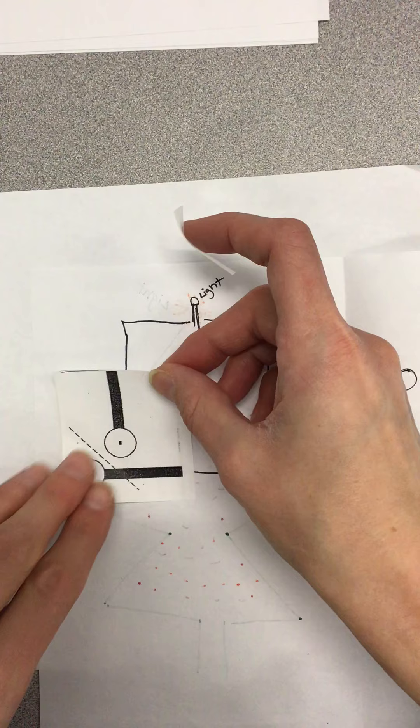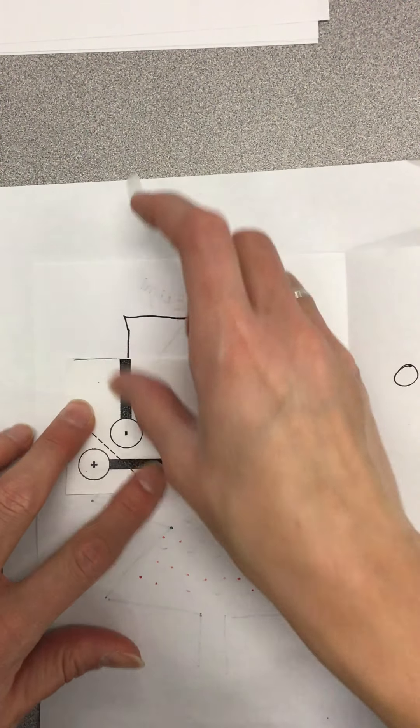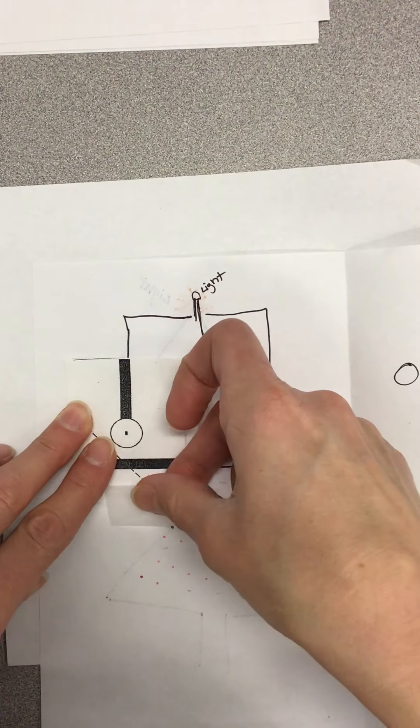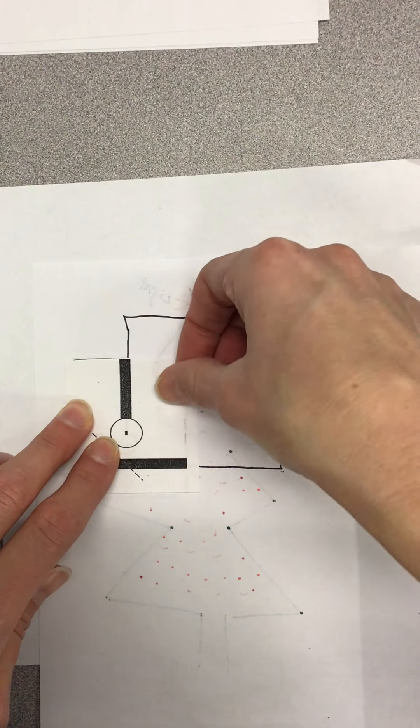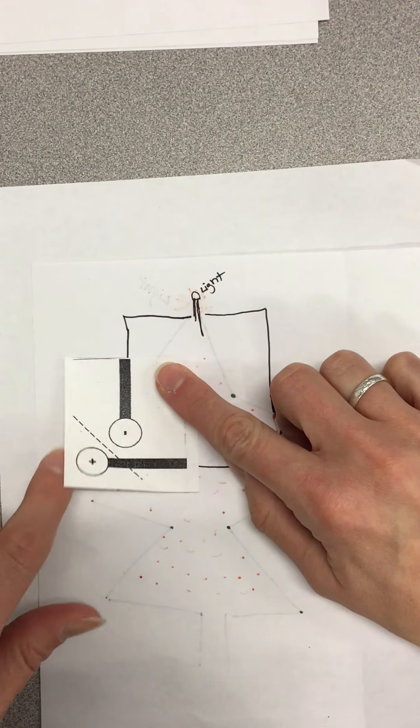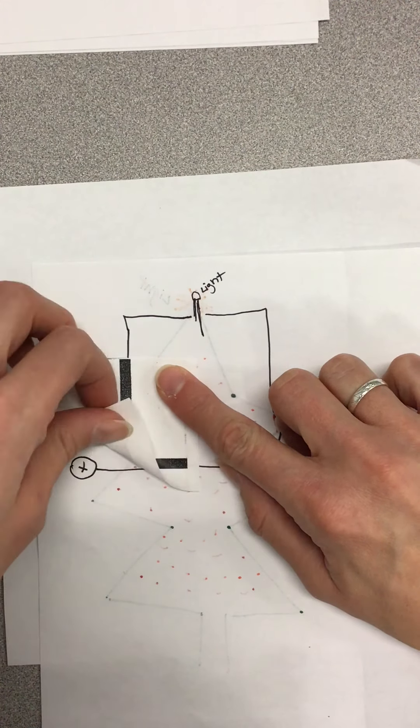What you want to do is tape it down where you want your connection to go and you want to tape it right in here. You don't want to tape it out here because this part is what's going to fold over.